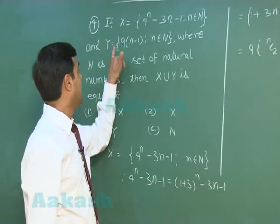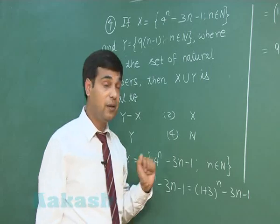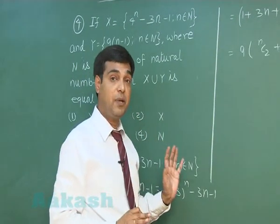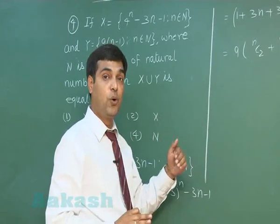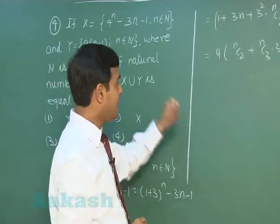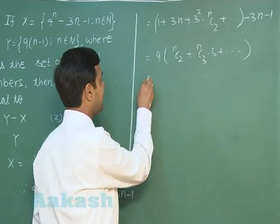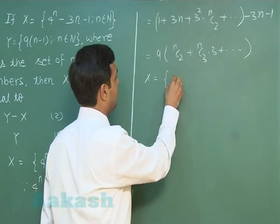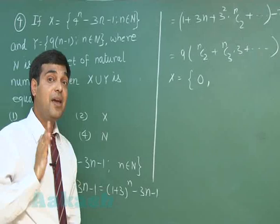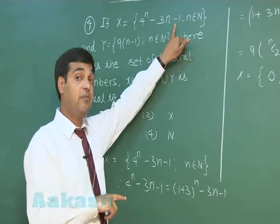Set Y is given as 9 times n minus 1, also a multiple of 9. So we can clearly see that set Y has all multiples of 9 — like 0, 9, 18 and so on — while set X has selected multiples of 9.